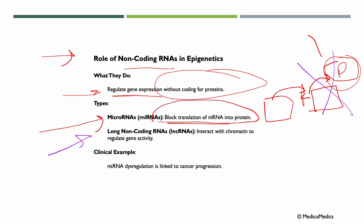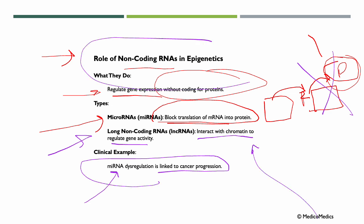We have long non-coding RNAs as well. These interact with chromatin to regulate gene activity. The clinical example is that microRNAs' dysregulation is linked to cancer progression. Non-coding RNAs are like traffic signals when you're driving a car or something. They're like traffic signals that tell your genes when to stop or when to go during protein production.